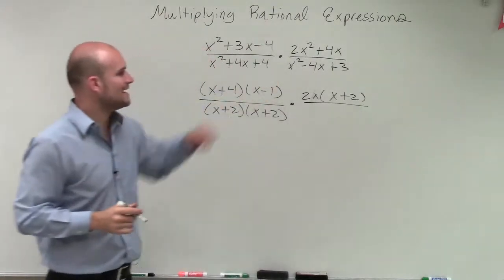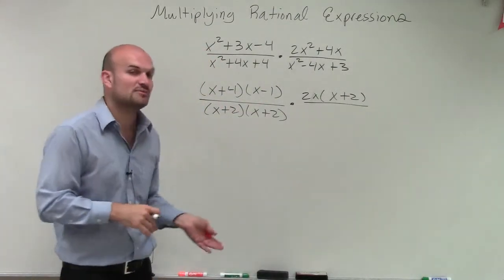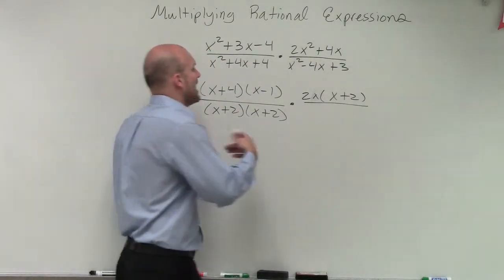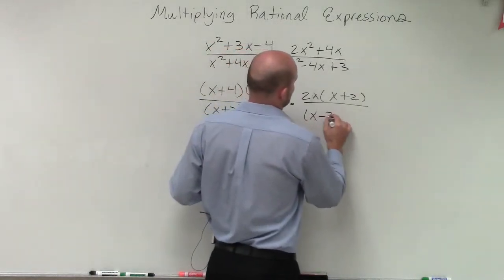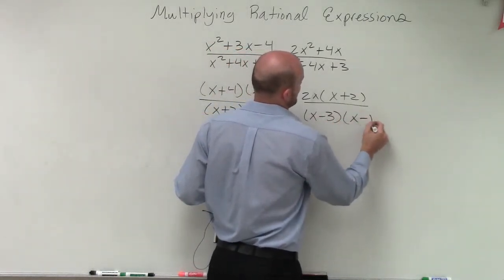And then over here, my last trinomial, I need to determine what two numbers multiply to give me 3, but then add to give me negative 4. So that's going to be x minus 3 times x minus 1.